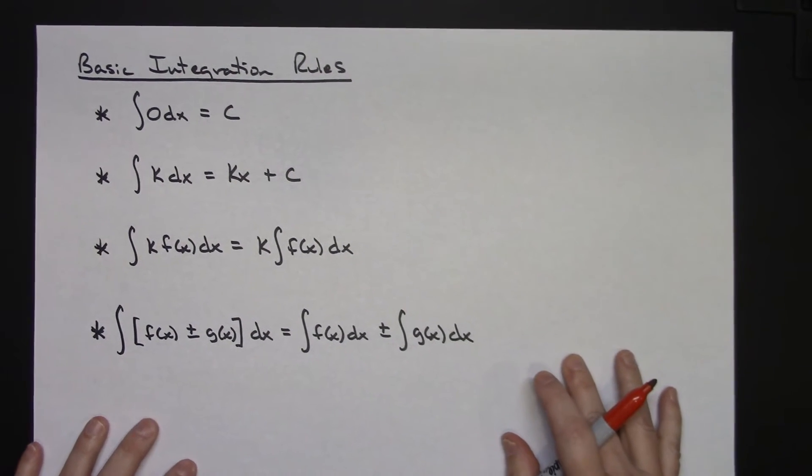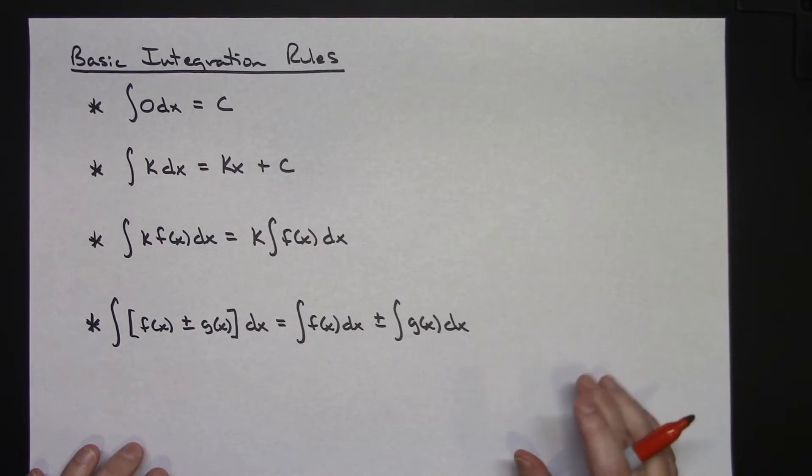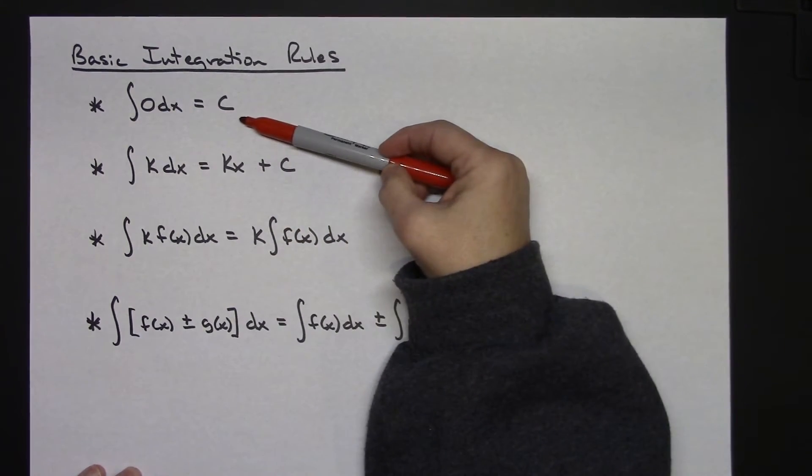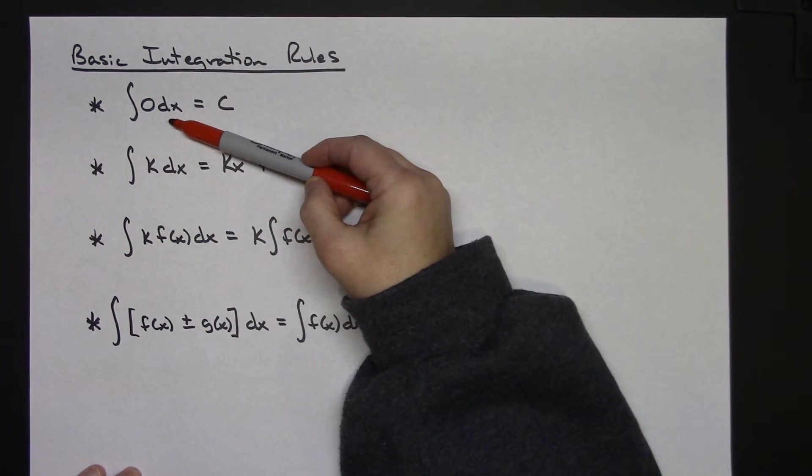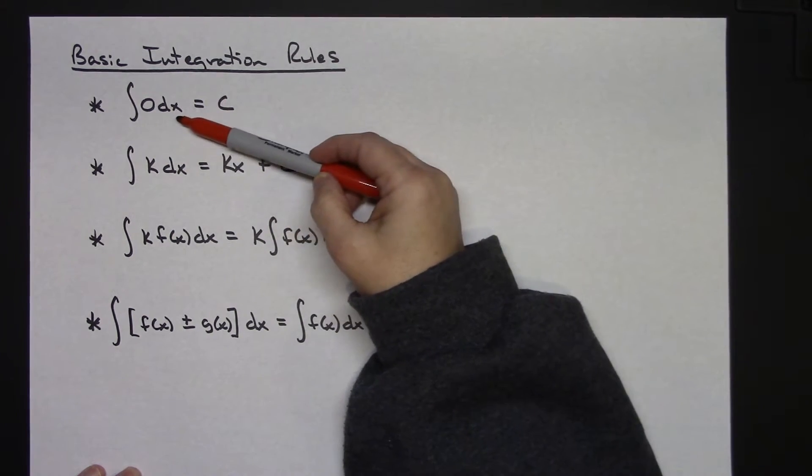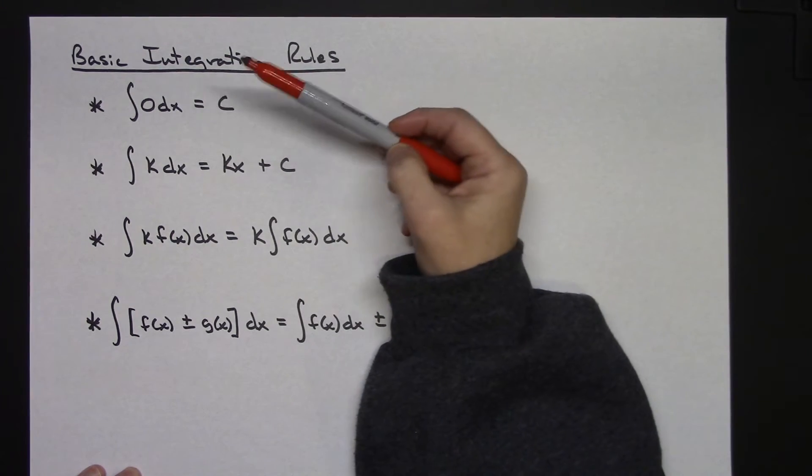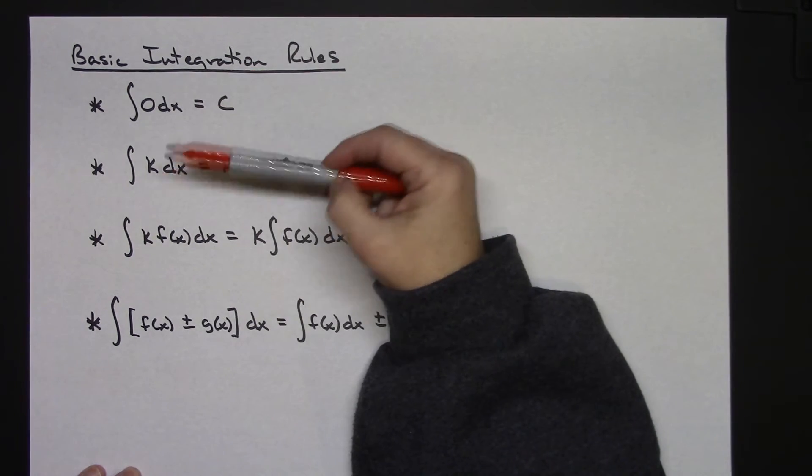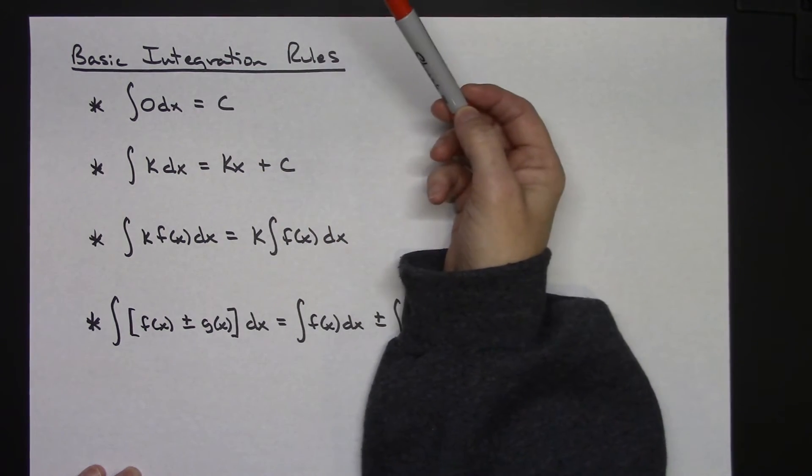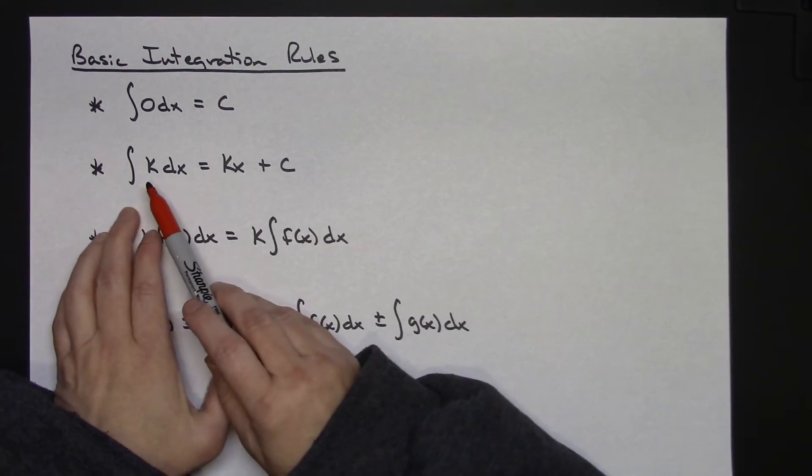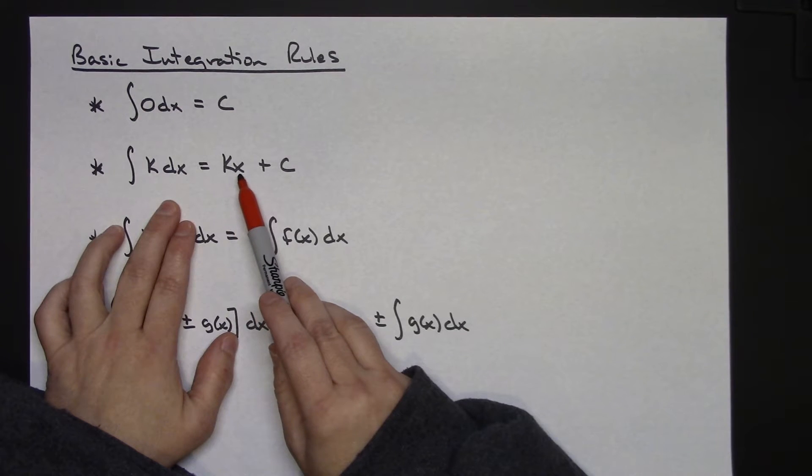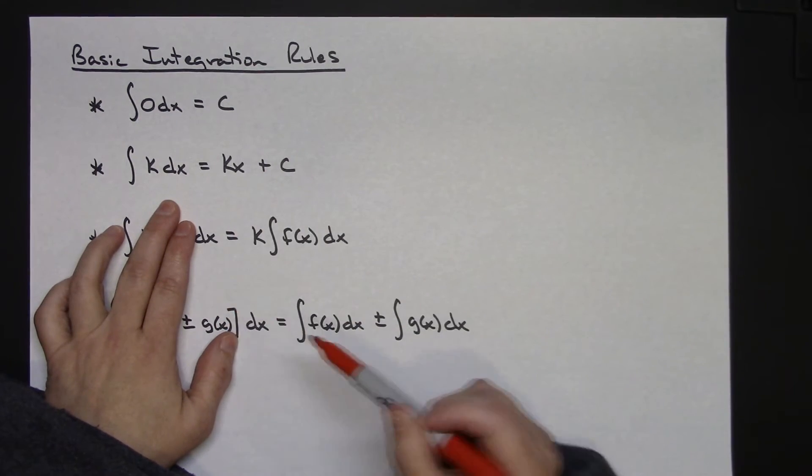Now we're going to go into and take a look at just four basic integration rules, and then we're going to call this quits on part one here. The first basic integration rule that we want to take a look at is if we integrate 0 dx, any time we integrate 0 dx, we should get a constant. And then stop and think about that. If I have some random number, like 4 or whatever, and then I take the derivative of it, it goes to 0. So that one should be self-explanatory.